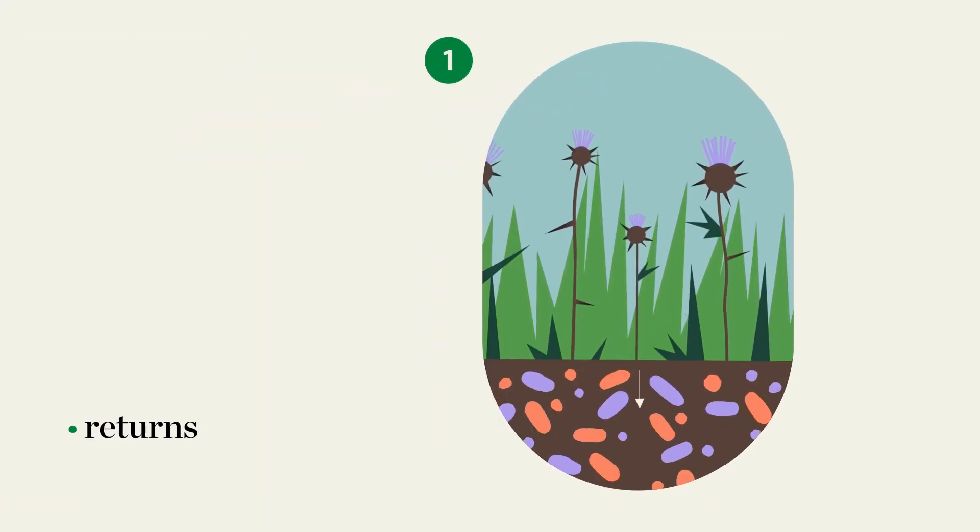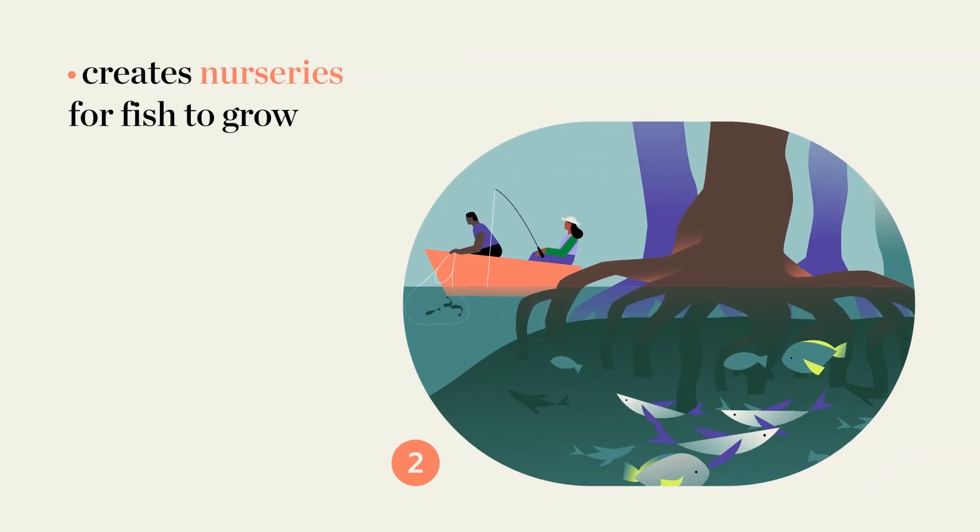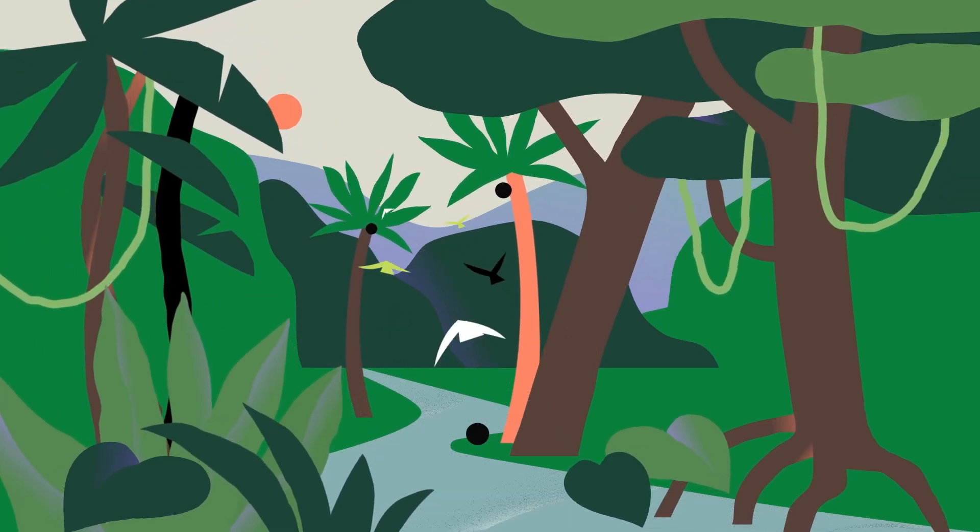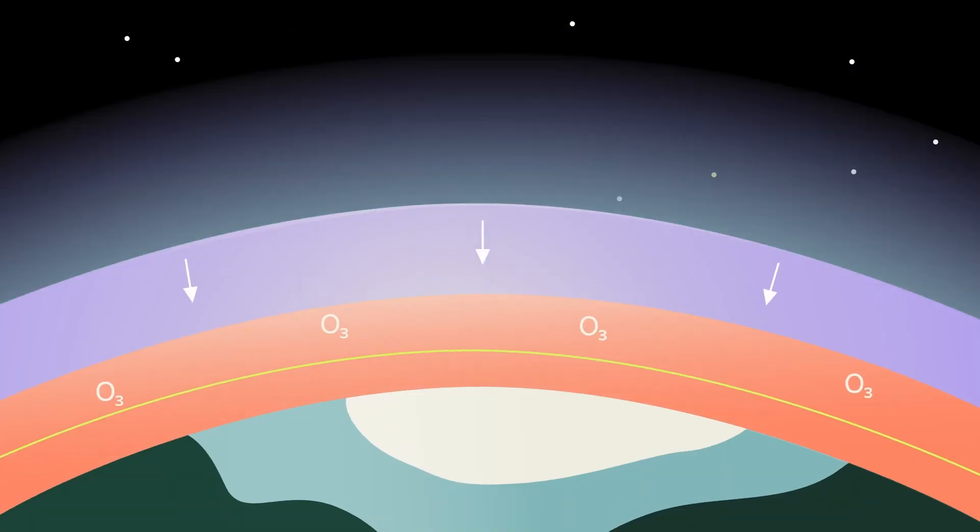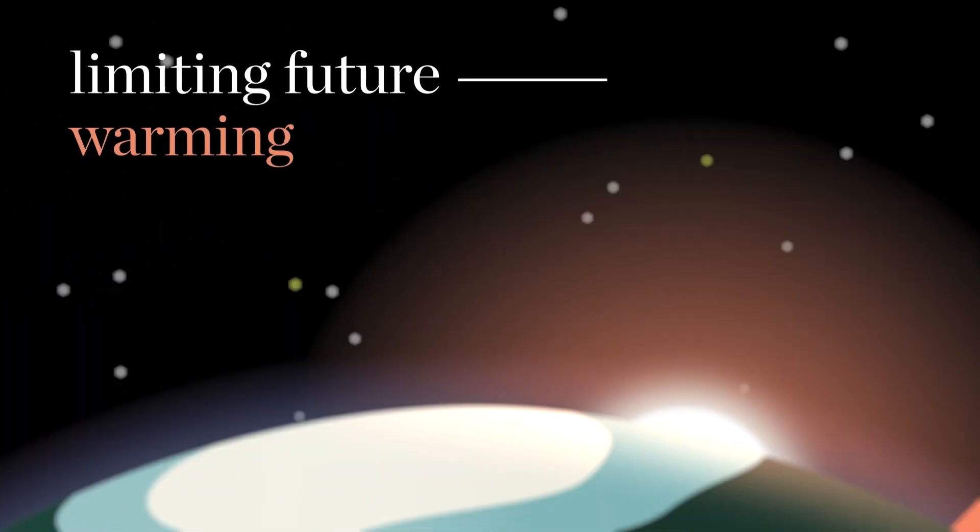Restoring habitat returns important nutrients to our soils, creates nurseries for fish to grow, and cleans our air and water. And nature isn't just helping us adapt to climate change now. It also keeps carbon out of the atmosphere, helping limit future warming. That's crucial.